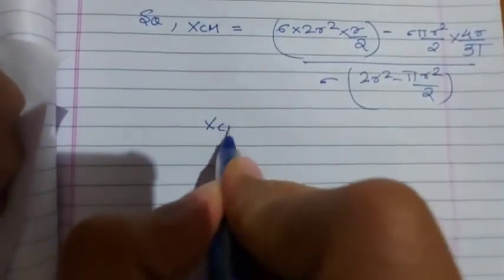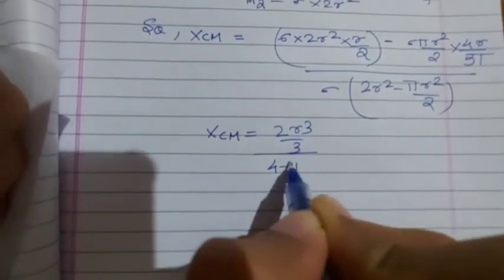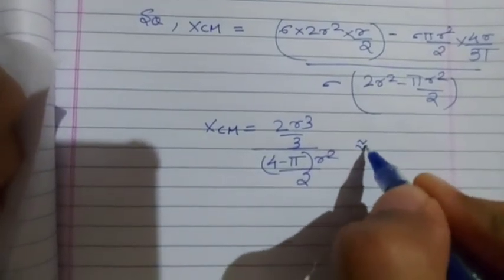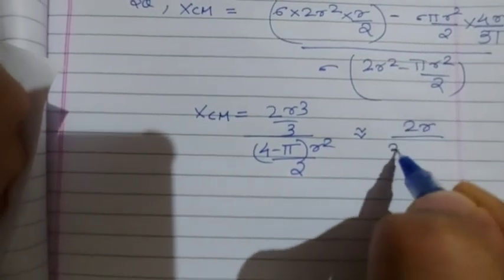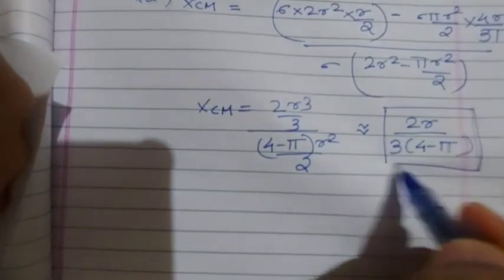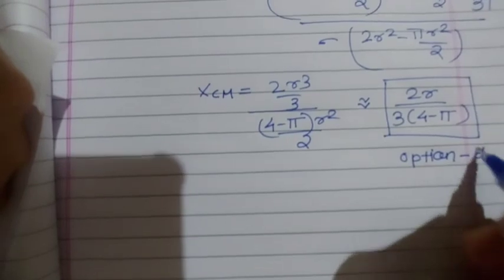So x center of mass equals 2r³/3 upon (4-π) times 2r²/2. From here we get center of mass is 2r/(4-π). So option B.